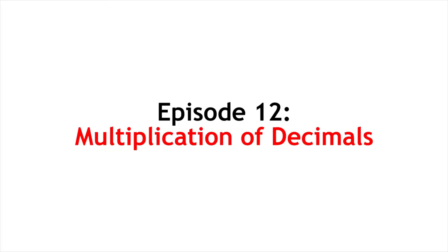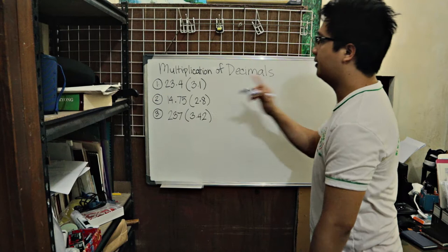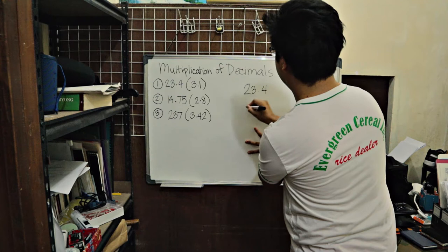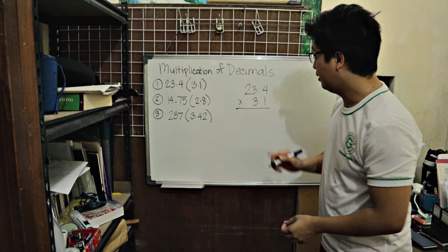Alright! Multiplication of decimals. Let's try 23.4 times 3.1. Let's try over here. 23.4 times 3.1. Paano gano'y magmultiply? Multi-digit multiplication.